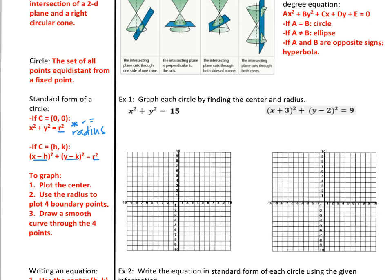Let's put this to the test. To graph, the first thing you'll want to do is identify your center. Then we'll determine the value of the radius to plot four boundary points in all directions from the center. Last but not least, we draw a smooth curve through those four points. Example one: Graph each circle by finding its center and radius. The left-hand side will always tell you about the center. The right-hand side will always give you what you need to know about the radius.